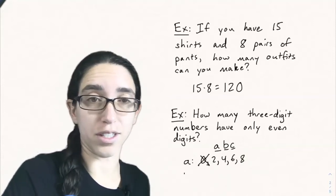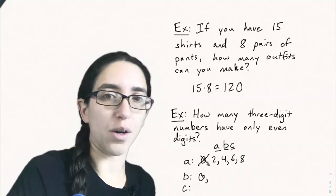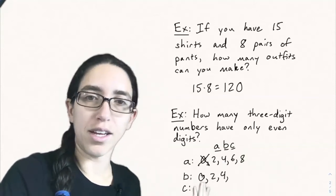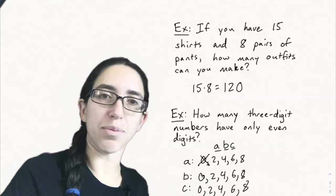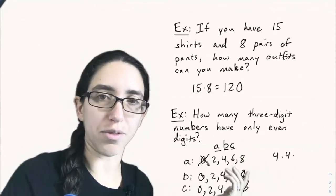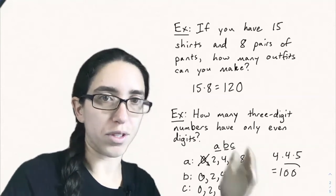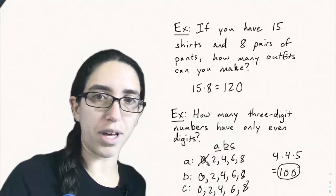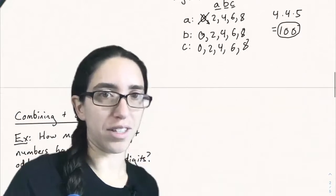And so B and C however are unrestricted. They can be any even digit 0, 2, 4, 6, or 8. And so now we just count up the possibilities for each. There are four possibilities for A, 5 for B, and 5 for C, and by the multiplication principle since we're choosing one of each we multiply them together to get 100. So there are 100 three-digit numbers that have only even digits.